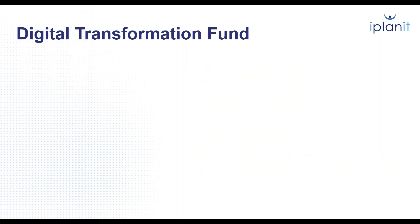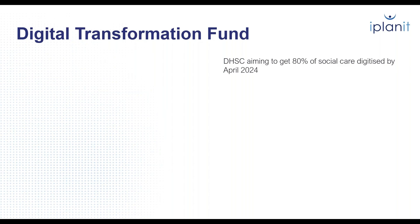So the Digital Transformation Fund — some of you may be aware, some of you may not. It's related to the Department of Health and Social Care aiming to get 80% of the social care sector digitized by April next year. It was originally 100%, but they've come back on that to 80%. The reason for this is that there are so many benefits to having a digital system over paper. Your data is live, and there's interoperability with other systems. The creation of the integrated care systems means there'll be a lot of data exchanged between health services and social care settings.